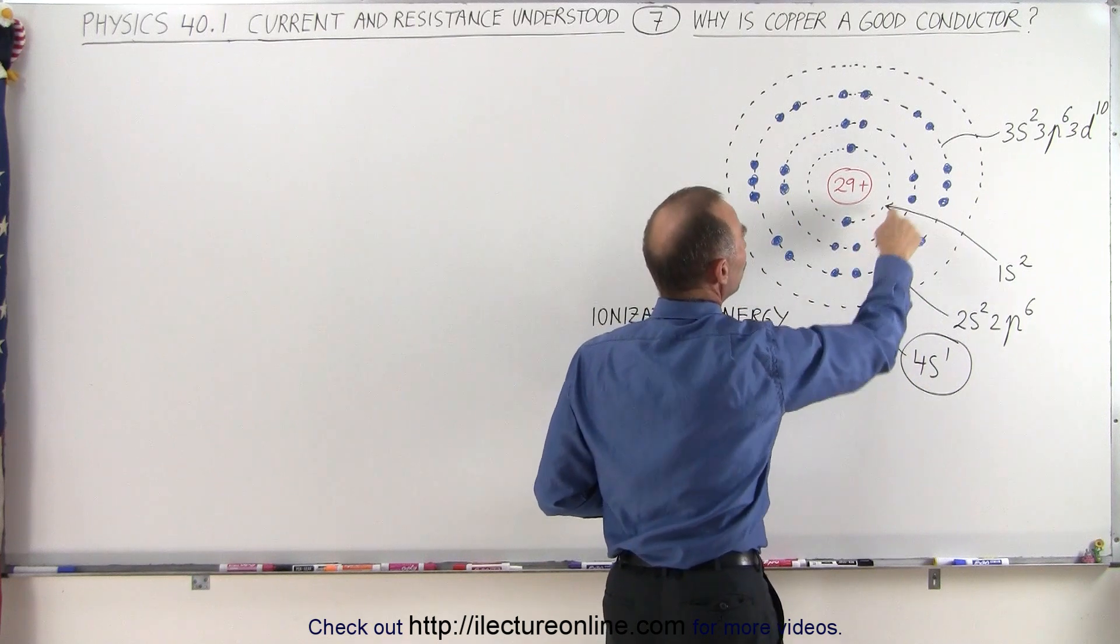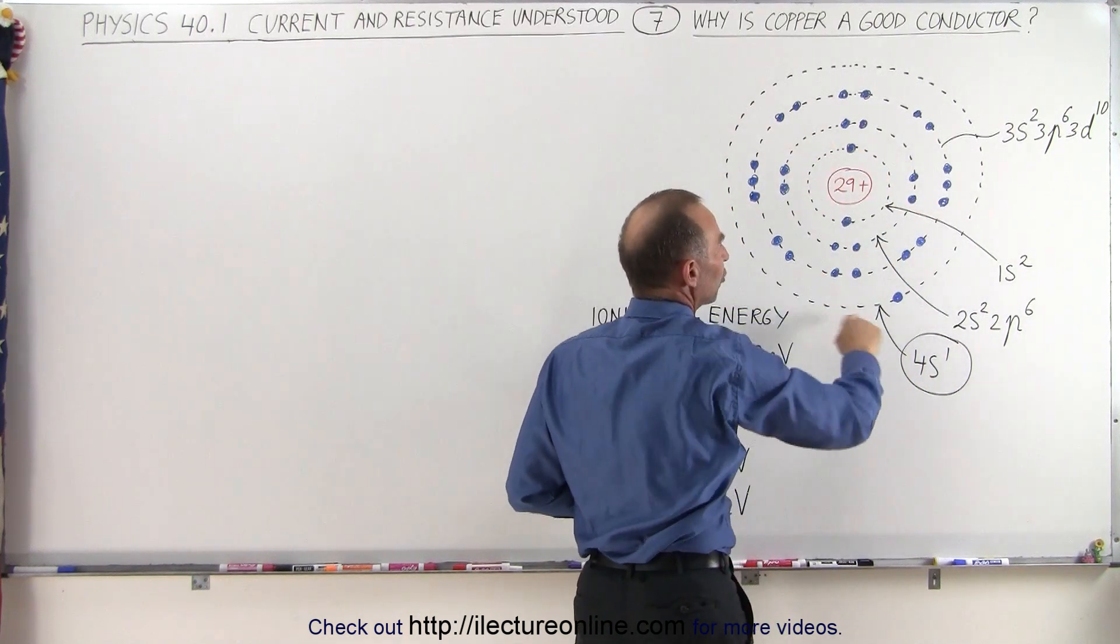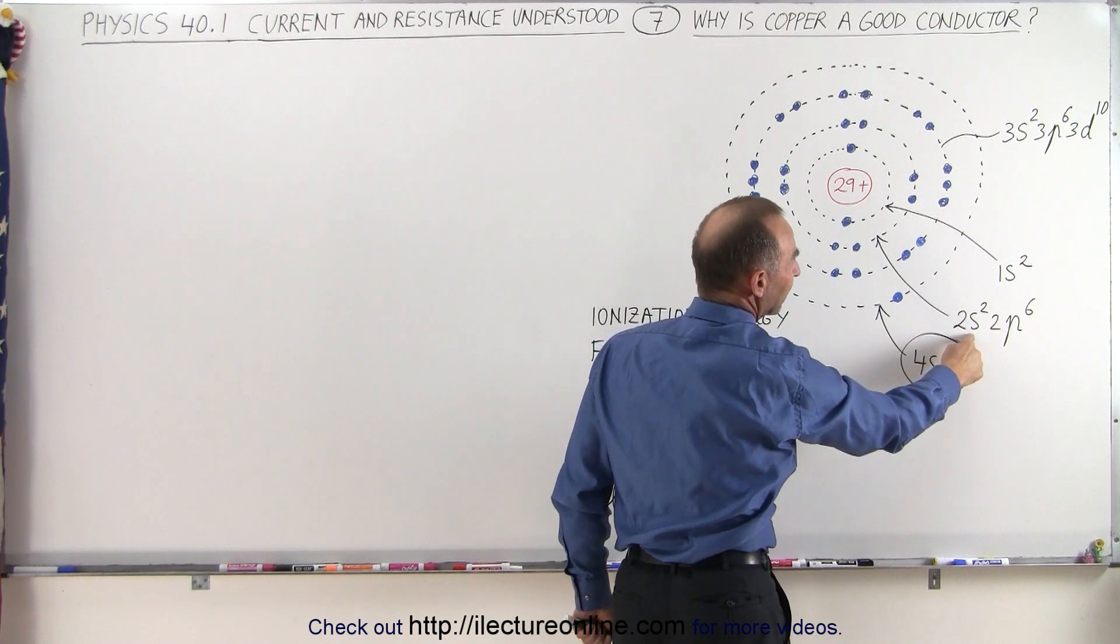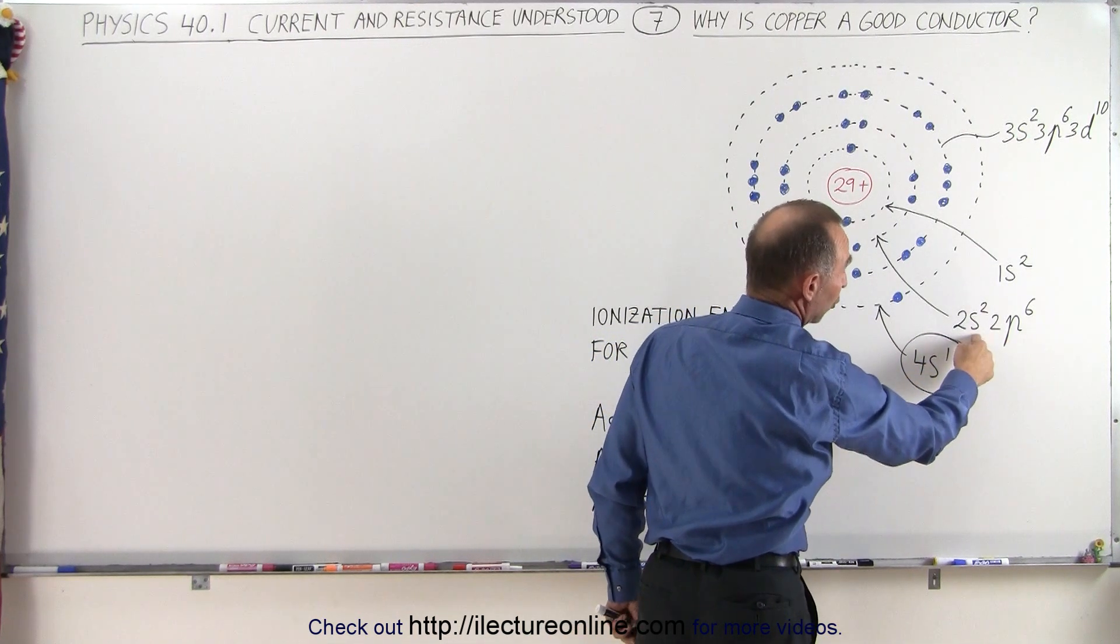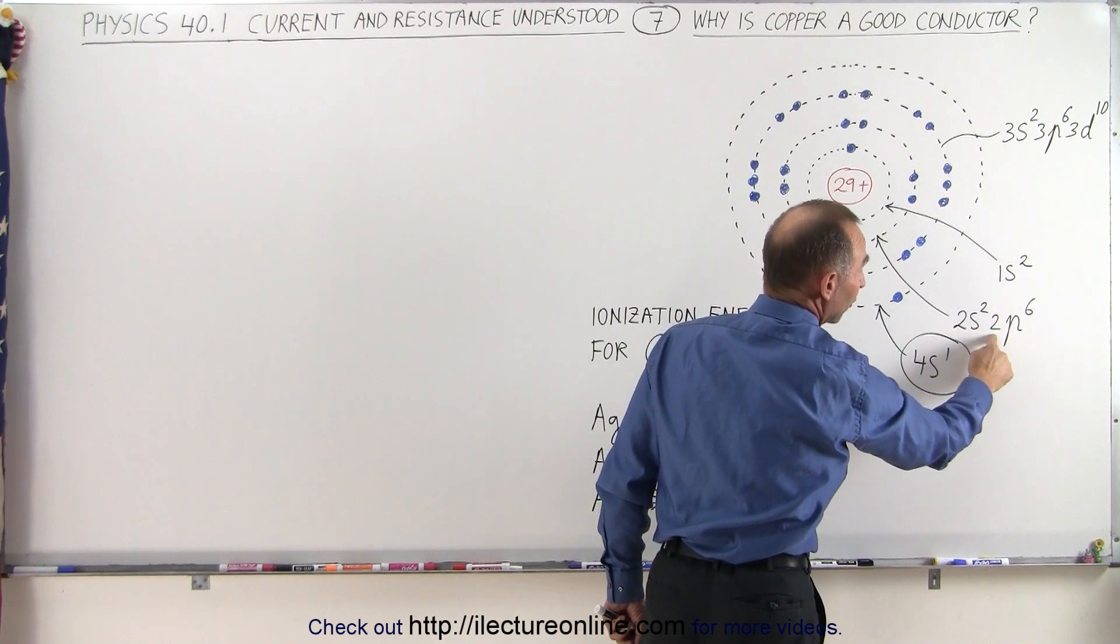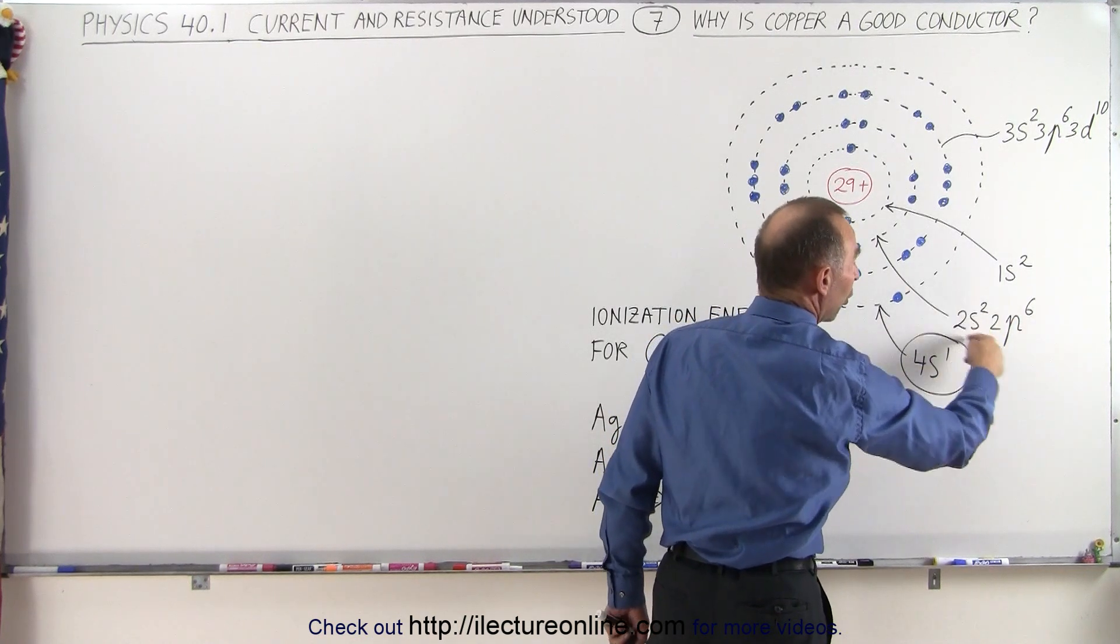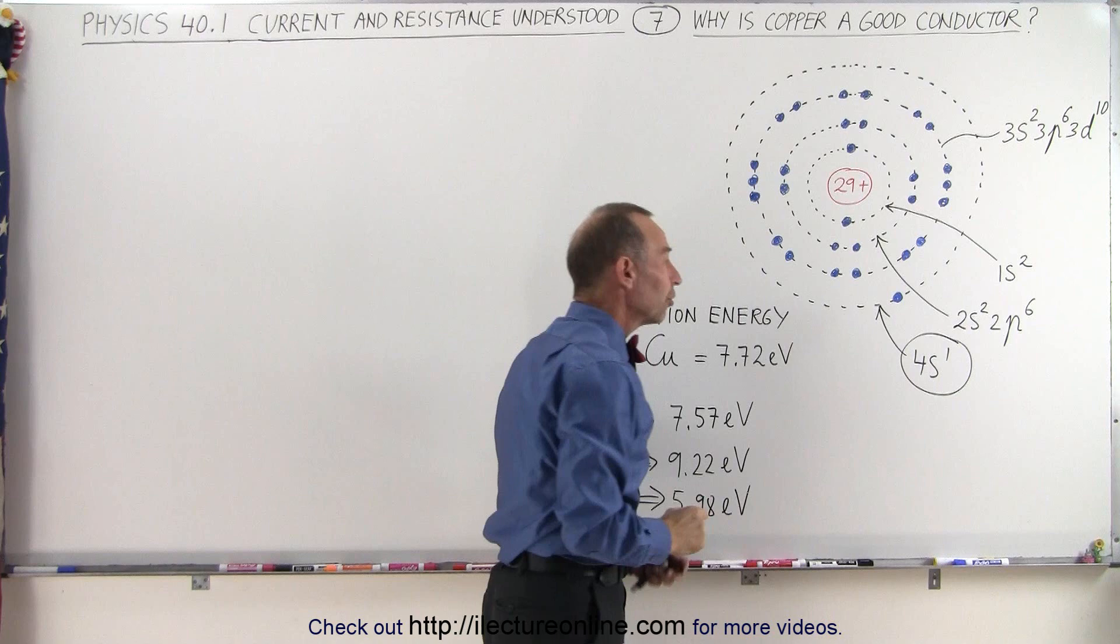The next 2, 4, 6, 8 electrons are in the second energy level and occupy the second s orbital and the first p orbital. So all of those orbitals are filled.